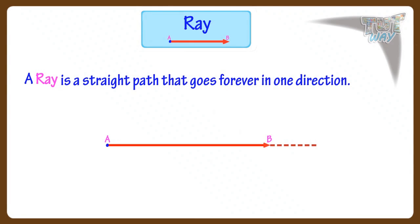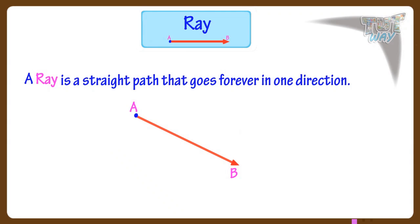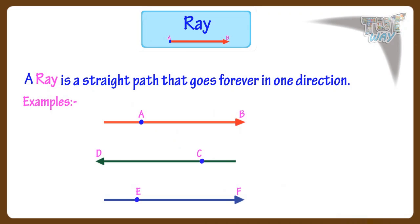Let's see what is a ray. A ray is a straight path that goes forever in one direction. That is, ray AB — there is an end point on one side, and on one side there is an arrow showing it goes forever in that direction. The symbol on top of the name shows that this is a ray, starting from A and going forever in direction B. Here are more examples of rays and they will be named like this.